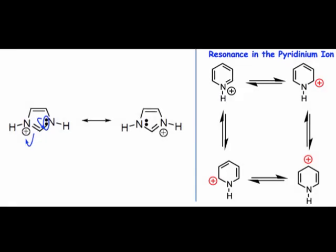Instead, the important point to note is that in protonated imidazole, the positive charge is delocalized over two nitrogen atoms, both of which satisfy the octet rule. In pyridine, the positive charge is delocalized over carbon atoms which, in the corresponding resonance structures, do not possess a full octet.